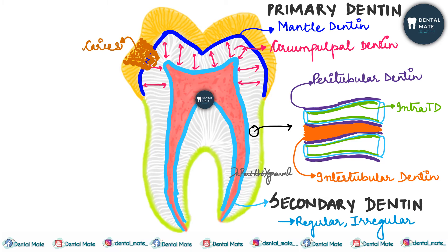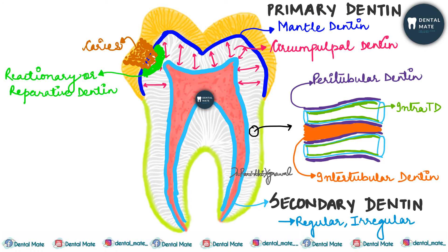In regular secondary dentine, there is a regular arrangement of dentinal tubules in all areas except the apical area. In irregular secondary dentine, there is irregularity shown by the apical dentine. Tertiary dentine — also called reactionary or reparative dentine — is formed as an outcome of the odontoblastic response to irritation caused by dentinal abrasion, attrition, cavity preparation, erosion, or dentinal caries.